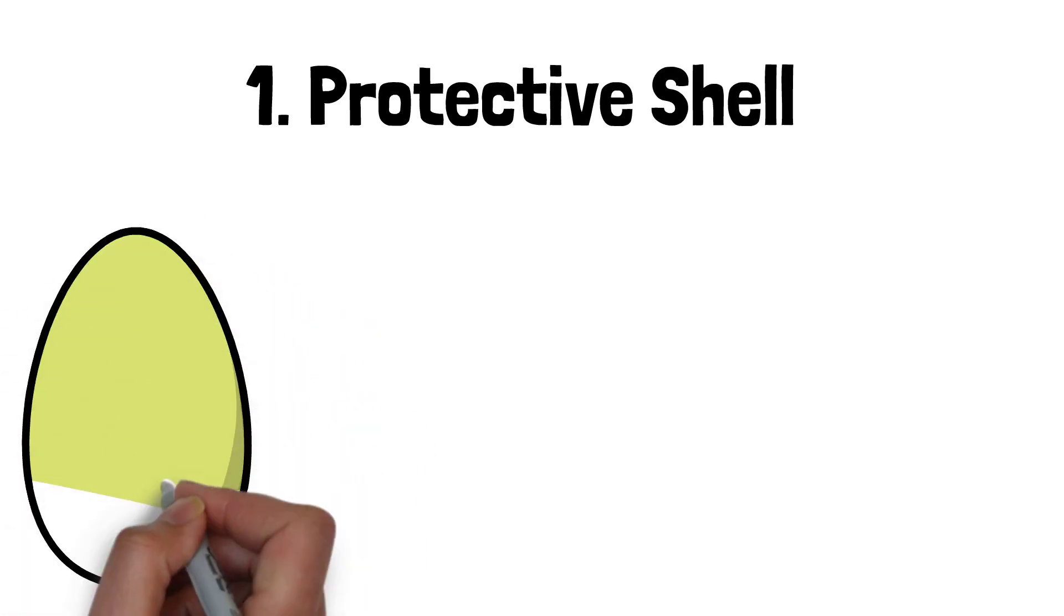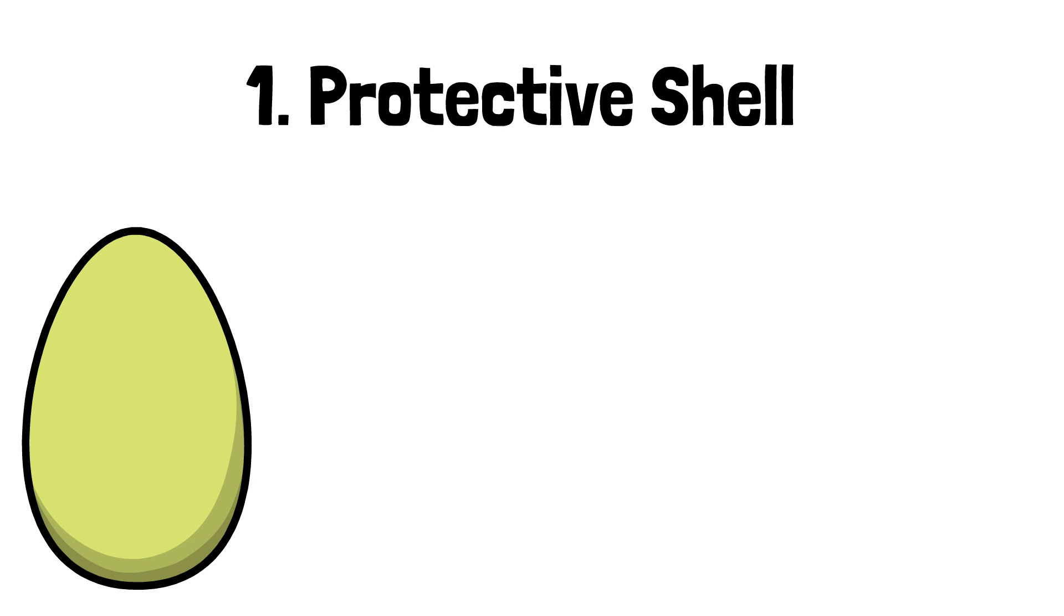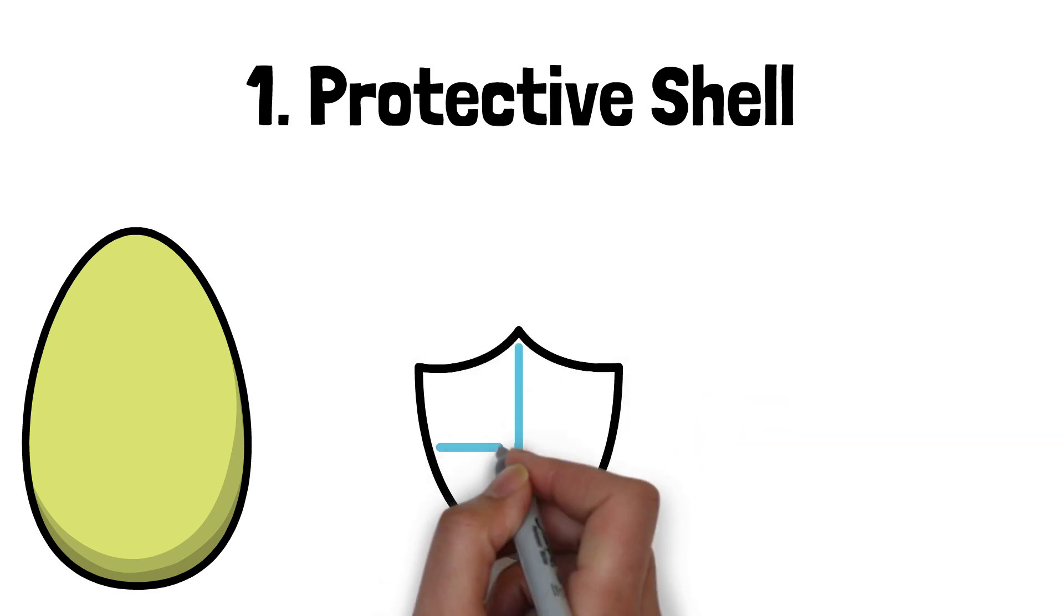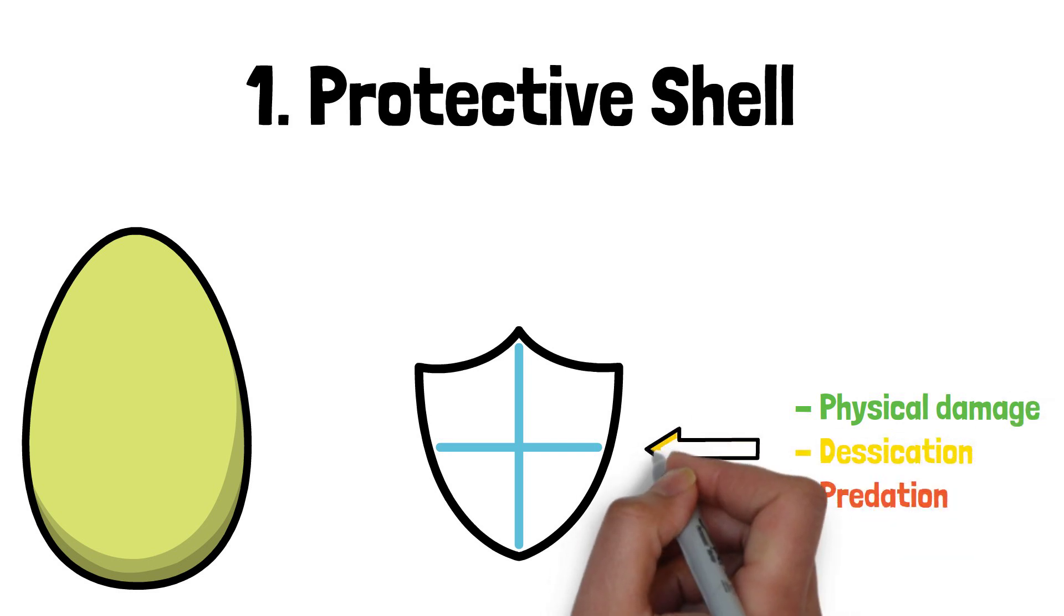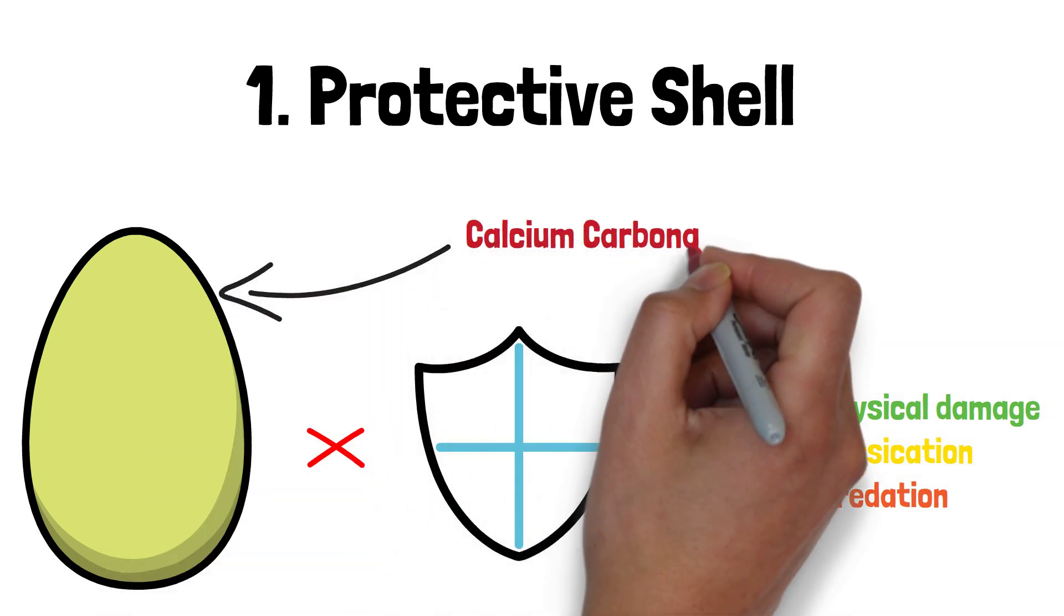1. Protective shells. Snail eggs are enclosed within a protective shell or capsule that shields them from physical damage, desiccation or drying out, and predation. These shells are typically made of calcium carbonate and provide a sturdy barrier against external threats.